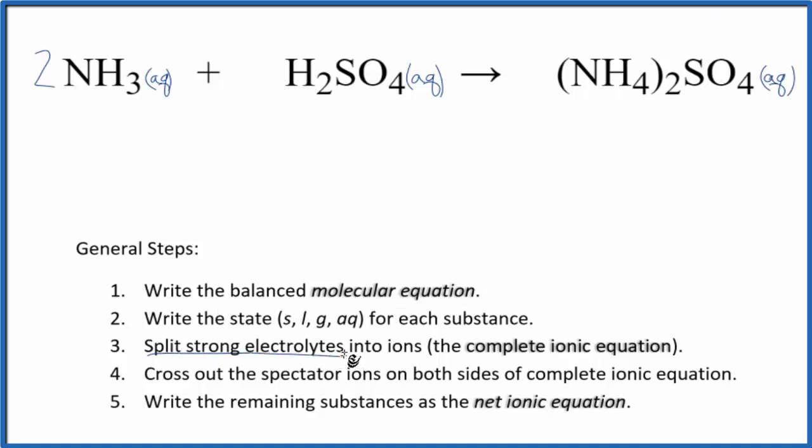Now we can split the strong electrolytes into ions. This is the complete ionic equation. We said that ammonia, that's a weak base. It's also a weak electrolyte. So because of that, we can't split it apart. We're just going to write 2NH3. I'll write the states at the end.